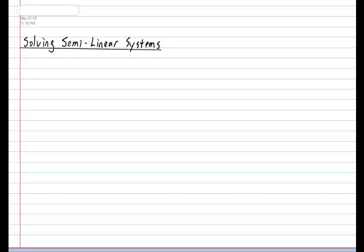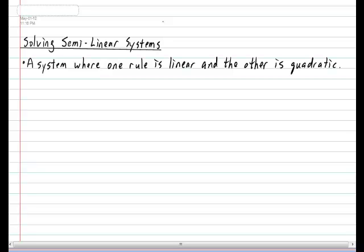Now the big question first is what is a semilinear system? Well a semilinear system is defined as a system of equations where one of the functions is linear but the other one is not. In our course we'll be focusing on the following kind of system. We will be focusing on semilinear systems where one rule is linear and the other one is quadratic.